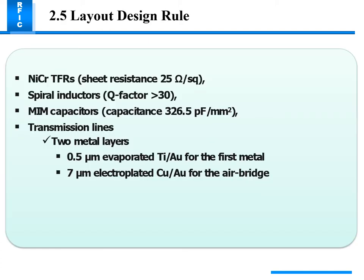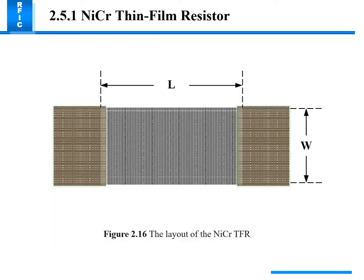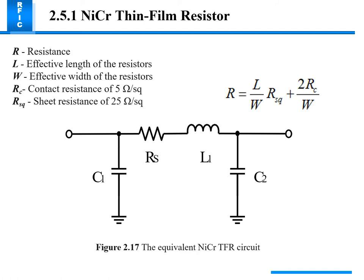The layout of the NiCr TFR (thin film resistor) shows spiral inductor and MIM capacitor and transmission line components. The resistor R is calculated using resistance, L is the effective length, and W is the effective width. Contact resistance is 5 micro-ohms and sheet resistance is 25 ohms per square.